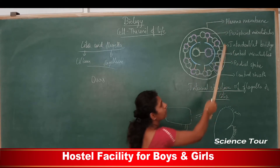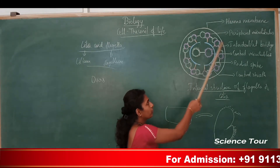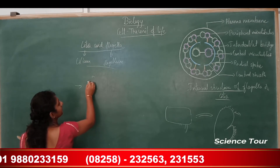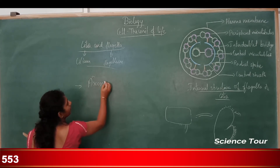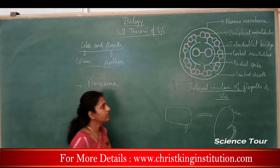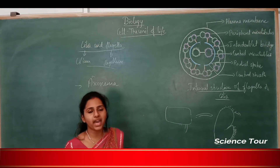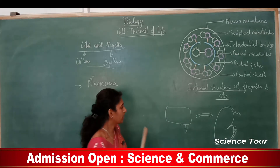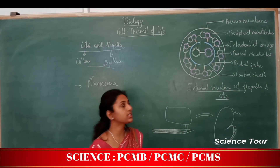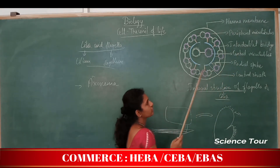Electron microscope study of the cilium and flagella reveals a long filament made up of microtubules, outerly covered by a plasma membrane. The central portion of the flagellum or cilia is called the axoneme. It contains a large number of microtubules arranged parallel to one another throughout the flagella.